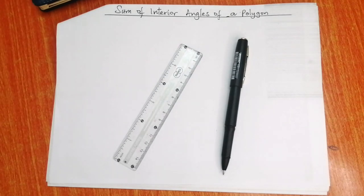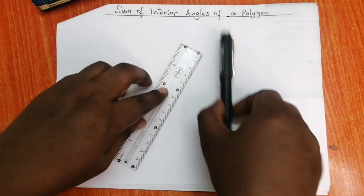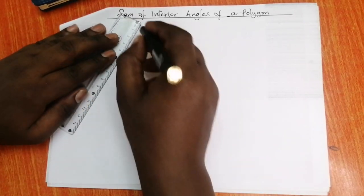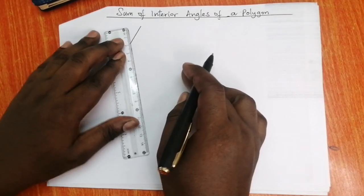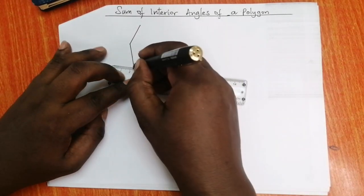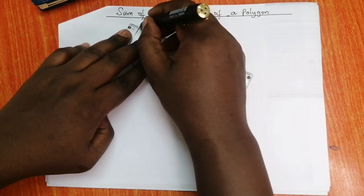Hello and welcome. Today we are going to learn how to determine the sum of interior angles of a polygon. It could be a regular polygon or an irregular polygon. So let's draw a simple polygon and see how we can go about it.